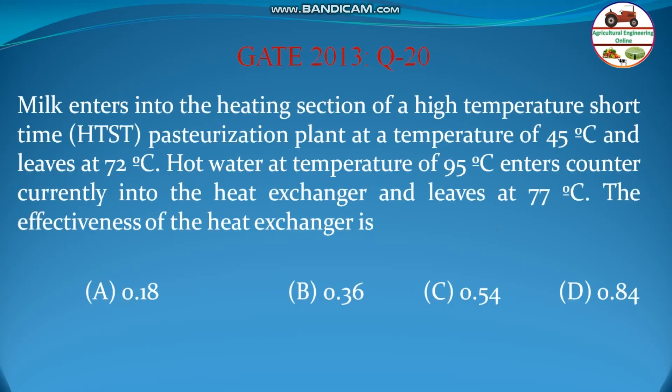Question 20: Milk enters into the heating section of a high-temperature short-time (HTST) pasteurization plant at a temperature of 45°C and exits at 72°C. Hot water at a temperature of 95°C enters counter-currently into the heat exchanger and leaves at 77°C. The effectiveness of the heat exchanger is: (a) 0.18, (b) 0.36, (c) 0.54, (d) 0.84. Heat effectiveness is the amount of heat actually transferred divided by maximum possible heat transfer.